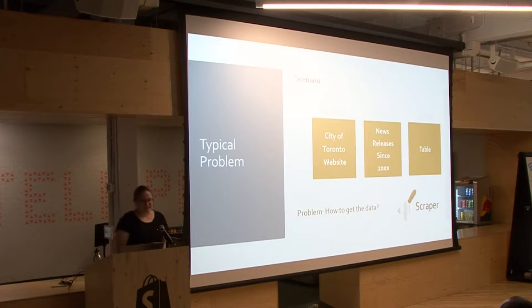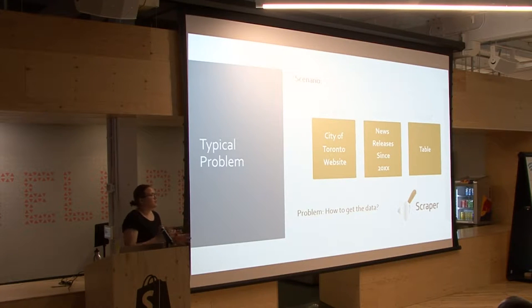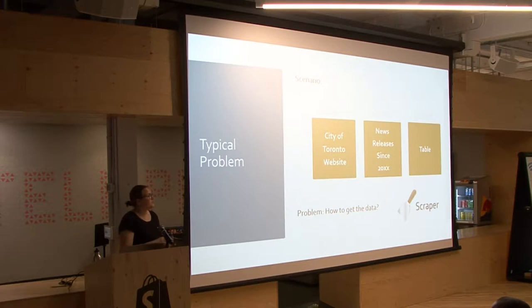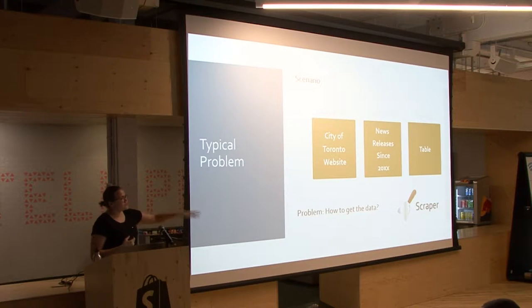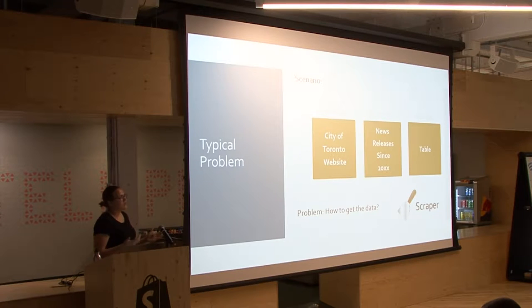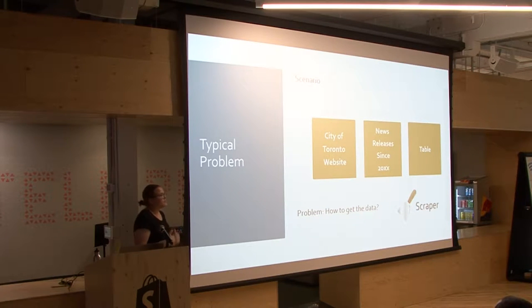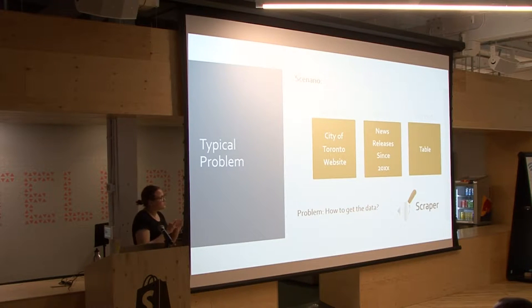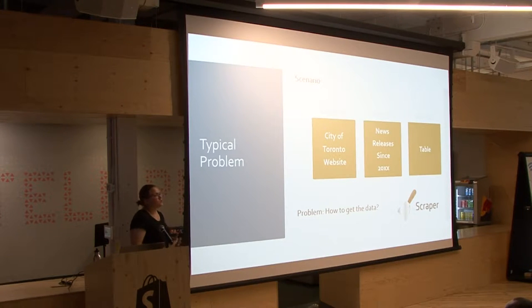In this presentation we're going to look at demos targeting different news releases for a few cities: the city of Toronto, Burlington, and Mississauga. They have news releases in some format on their sites. The problem is you want to download those news releases - specifically, for the purpose of our demo, we're just going to download the titles of those articles and the date they come out, using scraping.